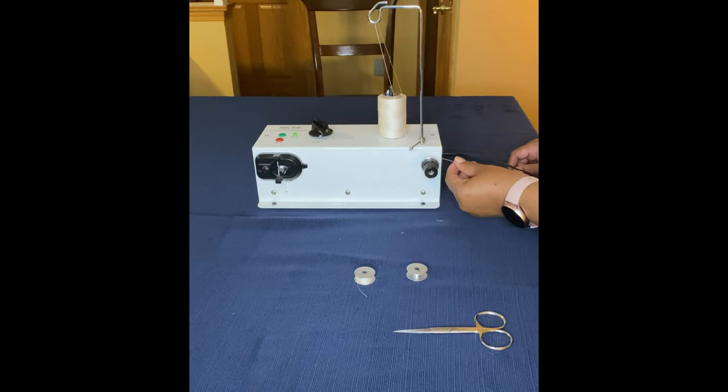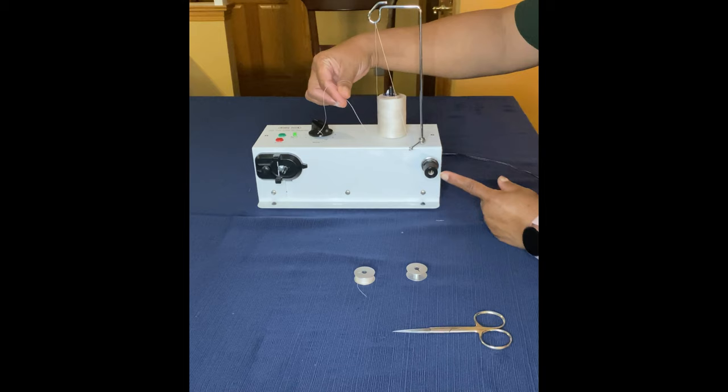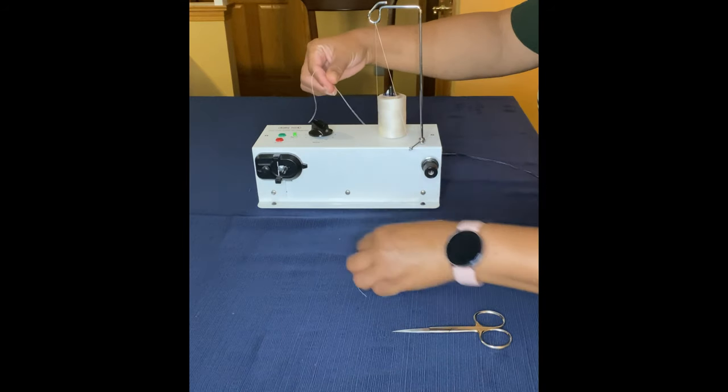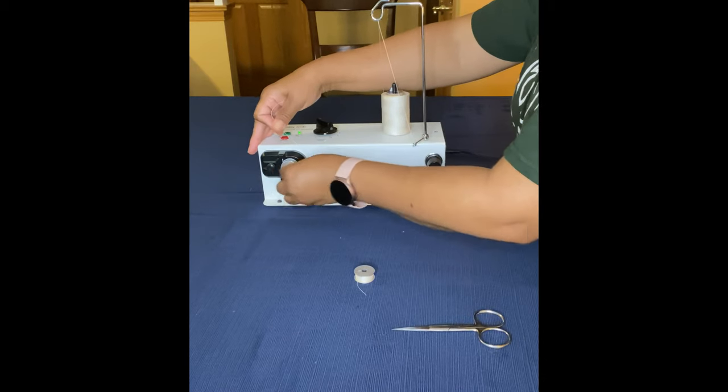Bring your thread up through the tension disc. Make sure that your thread is inserted between those tension discs. Then take your bobbin and place that onto the winder.